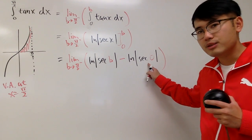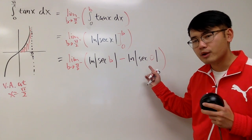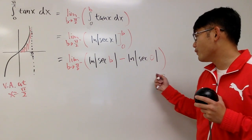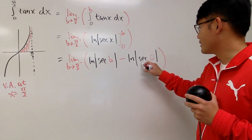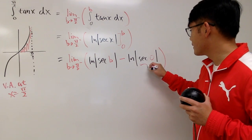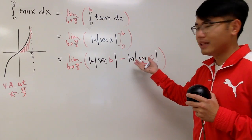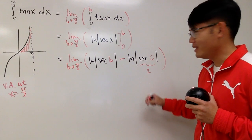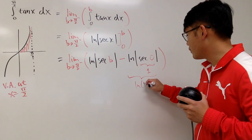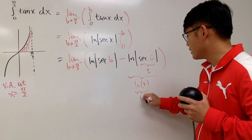Okay, secant 0 is the same as 1 over cosine 0. Cosine 0 is 1. So, 1 over 1 is 1. So, this is 1, right? So, you are talking about natural log of 1, which is going to be 0 altogether, right? Natural log of 1. So, this is just going to be 0.